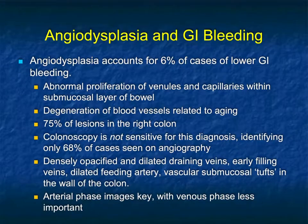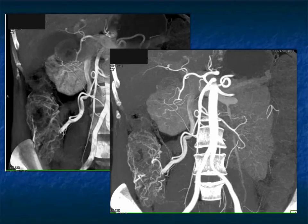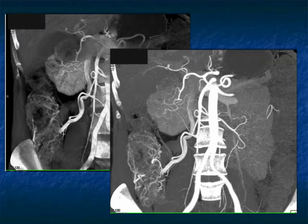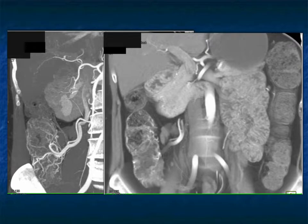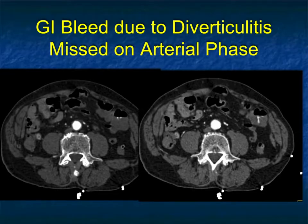Arterial phase imaging is the best phase, but when we do bowel for bleeding we're doing two phases, so we'll have both. Here's a good example of looking at the prominent vessels in the cecum and right colon. This case also makes the point that you really need to go beyond the axials — look on the MIP and volume rendering. Look how nicely that angiodysplasia is seen: the prominent vessels in the bowel, the prominent feeding vessels. Very subtle on the axial, but very obvious on volume-rendered and MIP imaging. Angiodysplasia can occur also in small bowel, but in large bowel it's most commonly in the right colon and cecum.